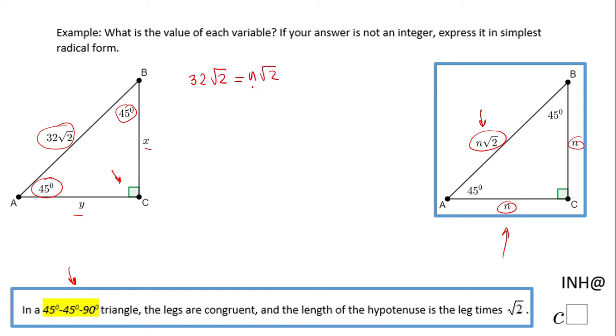In this equation I need to find n, so I'm gonna divide by square root of 2 to get rid of this square root of 2. So I'm gonna do the same here, divide by square root of 2.